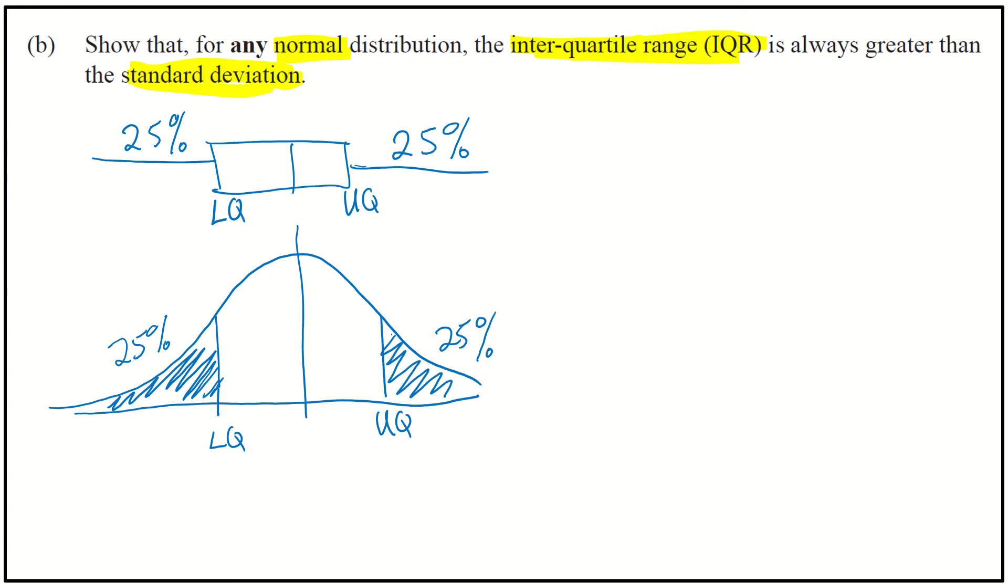So that's what we want to find, is we want to find these quartiles, and then we need to find the range, the interquartile range itself, which is our upper quartile minus our lower quartile. Okay, so that's what it's talking about with the interquartile range. And we want to be able to compare that with the standard deviation.